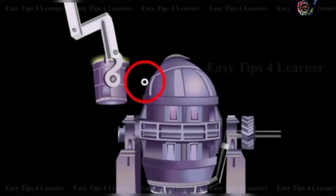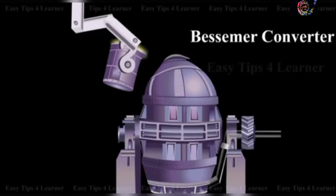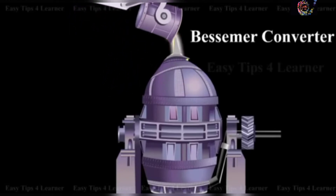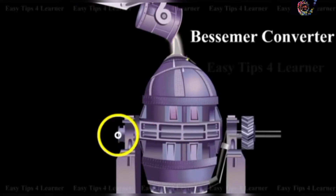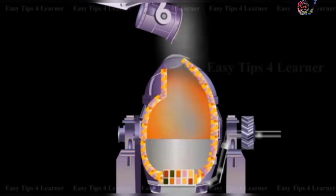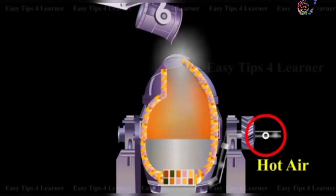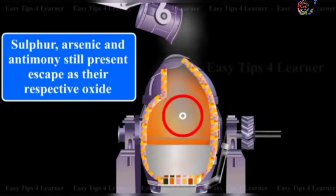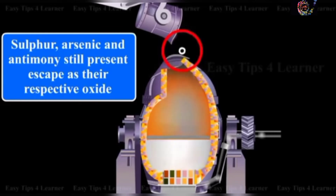The fourth step is bessemerization. The molten matte is transferred to a Bessemer converter, as shown in the visual. The converter is mounted on a horizontal axis and fitted with small pipes called tuyeres, through which a blast of hot air and fine sand is admitted. Any sulfur, arsenic, and antimony still present escape as their respective oxides.